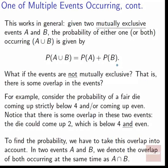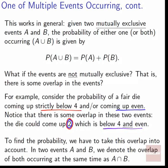What if the events are not mutually exclusive — there is some overlap, and you could be A and B at the same time? For example, consider the probability of a fair die coming up strictly below 4 or coming up even. Below 4 means 1, 2, or 3. Even means 2, 4, or 6. There is overlap: the die could come up as 2, which is both below 4 and even. We denote the overlap of both occurring at the same time as A intersect B.